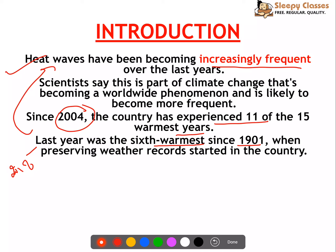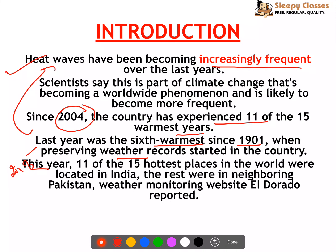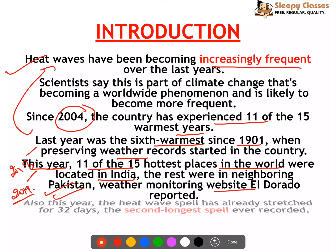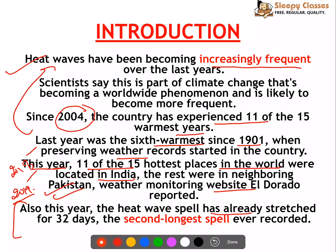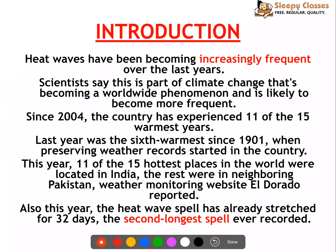In 2019, 11 of the 15 hottest places in the world were located in India, and the rest were in neighboring Pakistan - as reported by a weather monitoring website. Also, this year the heat wave spell had already stretched for 32 days. So both frequency and duration of heat waves have increased.